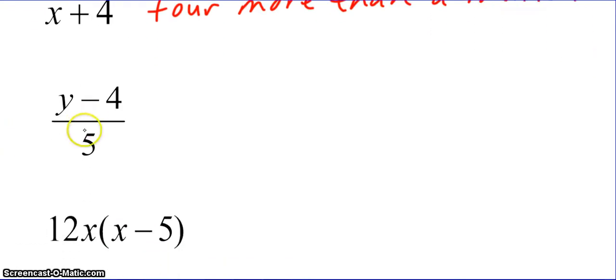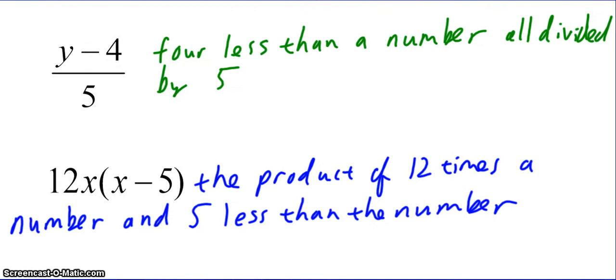So now I want you to do that for the next two. Pause the video, try, unpause when you're ready to discuss. Okay, so again, these are not the only way to verbally describe these. So if I have y minus 4 over 5, I could say 4 less than a number all divided by 5. When I have 12x times the quantity x minus 5, I can say the product of 12 times a number and 5 less than the number. Again, there's a few other ways you can say this. If you're not sure, check with your teacher in class.